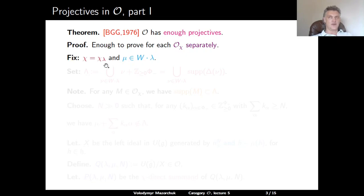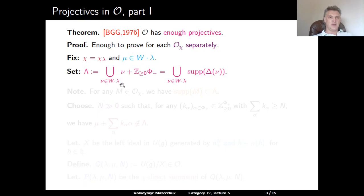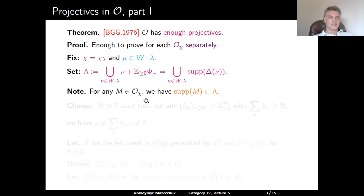So λ is a fixed element of the dual space of the Cartan. We consider the set Λ consisting of all weights of the following form: the union over all elements in the dot-orbit of λ under the Weyl group, and for each such element ν, we take ν plus all possible linear combinations of negative roots with non-negative integer coefficients. This set is exactly the support of the Verma module Δ(ν). Since all simple objects in O_χ are simple quotients of such Verma modules, for any object M in O_χ, the support of M is a subset of Λ.